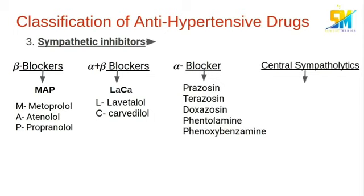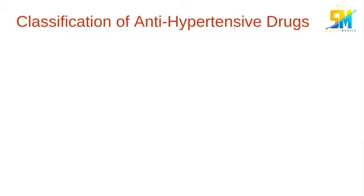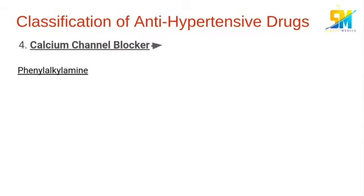In central sympatholytics we have clonidine and methyldopa. The fourth category is the calcium channel blockers, which include phenylalkylamine — in which the drug is verapamil — and benzothiazepine, in which the drug is diltiazem.